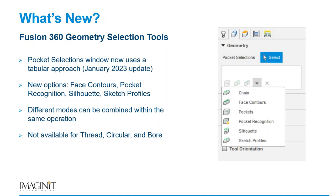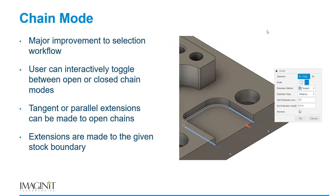The only toolpaths it's not added to are thread, circular, and bore, because those are based on cylindrical geometry where you're not selecting an open contour. Chain mode is going to be the most flexible and probably the most commonly used method when choosing a 2D boundary. You can now switch between open and closed while making the selection. In the past, you had to double-click an edge to switch between open and closed — it was very vague, and a lot of people didn't even know that capability was there.